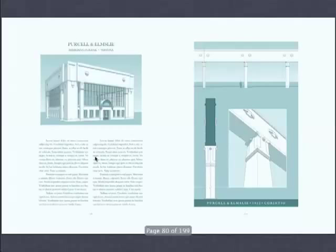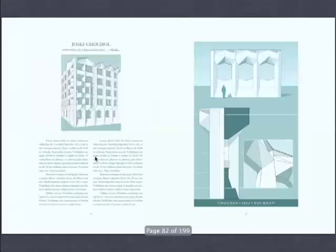Hans Poelzig again. Josef Chochol — this is important. This is the fellow who said Czech architecture must be based on cubism. This is interesting only in that it affected, as you will see, Marcel Breuer, who came later.